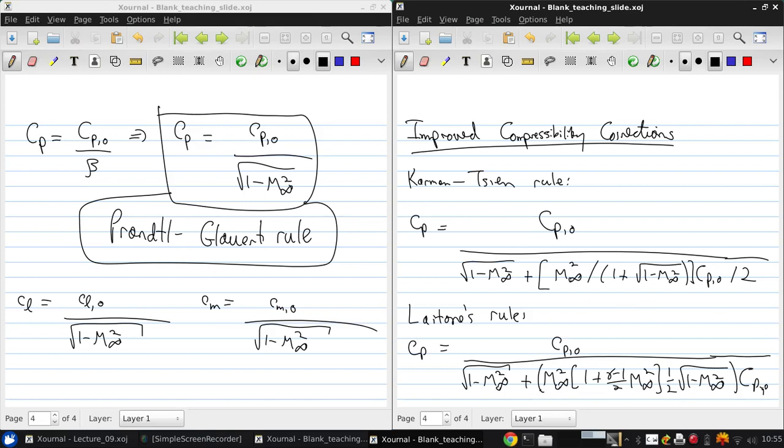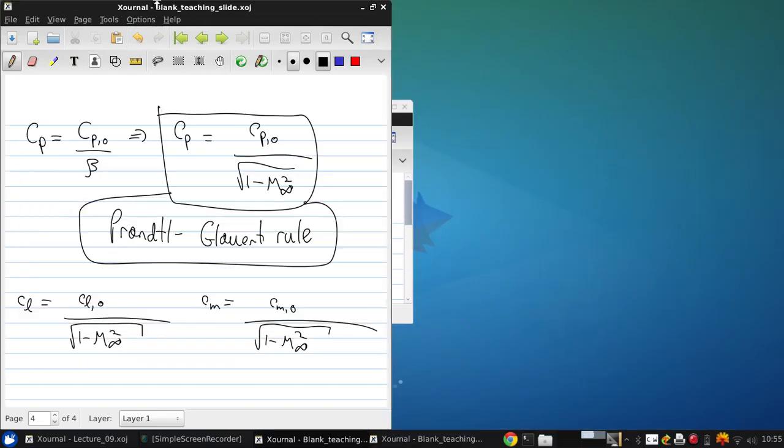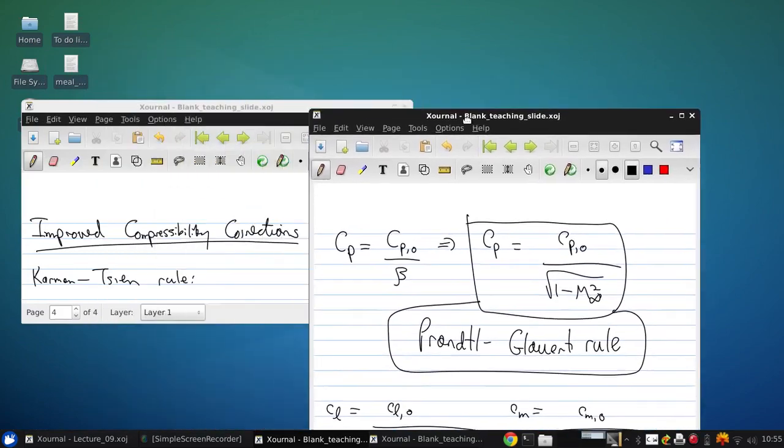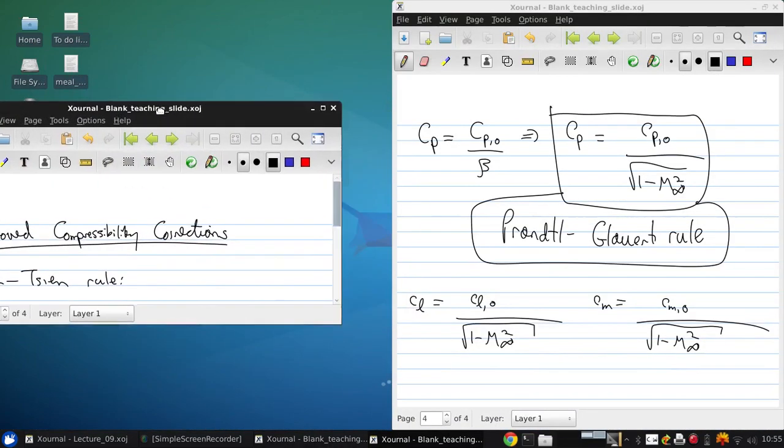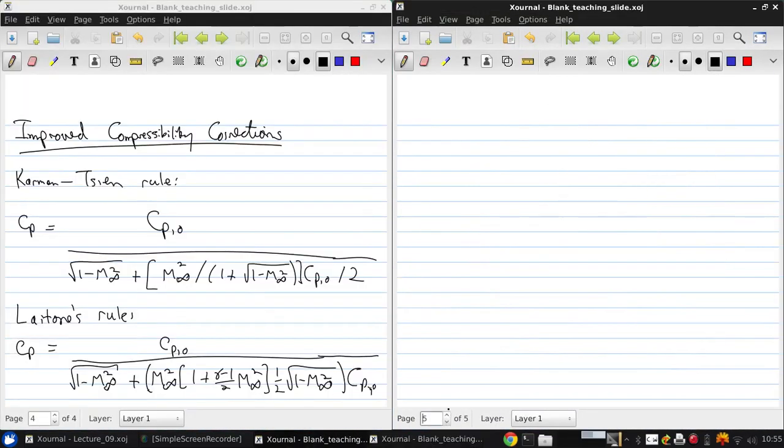So what happens in reality is that the Prandtl-Glouart rule tends to underpredict the pressure coefficient because it's based on linear theory. While the Carman-Sien and Layton rules account for some of those non-linear aspects, the real values of CP tend to fall somewhere between these two corrections. So averaging both of these and using the result is actually not a bad idea.